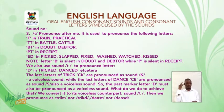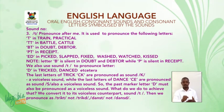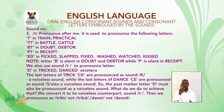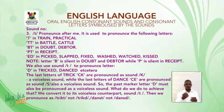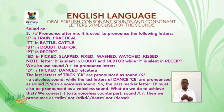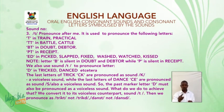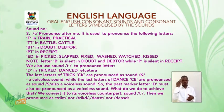Sound number three: /t/. It is used to pronounce the following letters: TT in train, practical; T in battle, cattle; BT in doubt; BT in receipt; ED in pits, slats, fixed, watched, kissed. Note: letter B is silent in doubt and gutter, while P is silent in receipt.